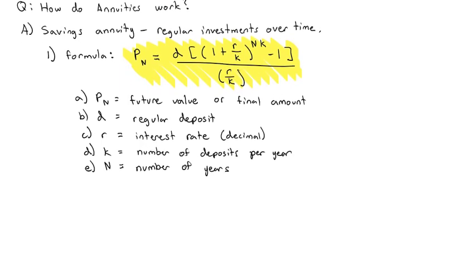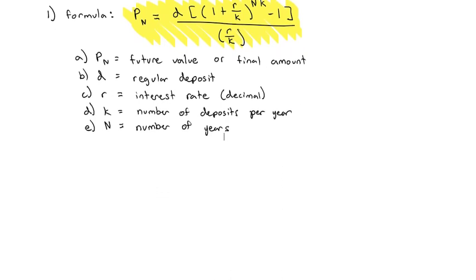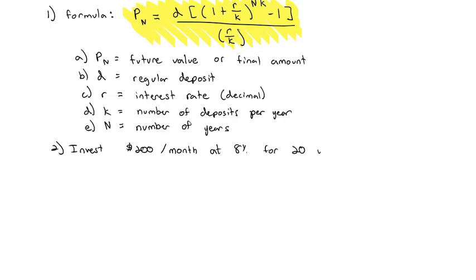So let's see if we can use this formula to estimate how much is going to be in the account after some time. Let's say you invest $200 per month at 8% for 20 years. How much will you have?